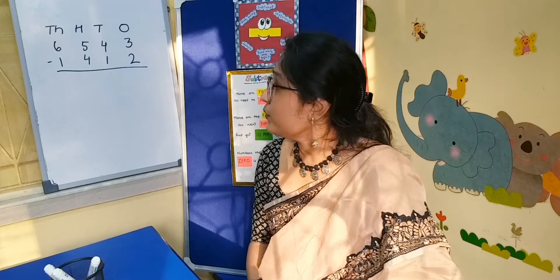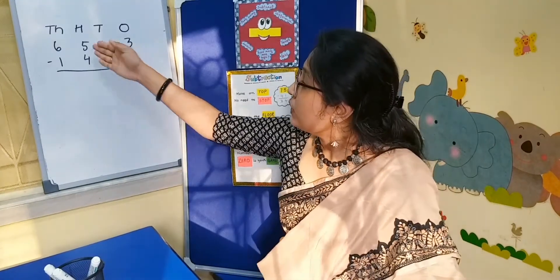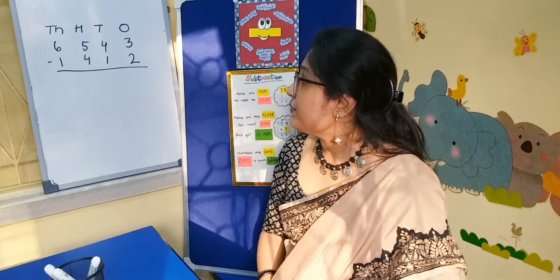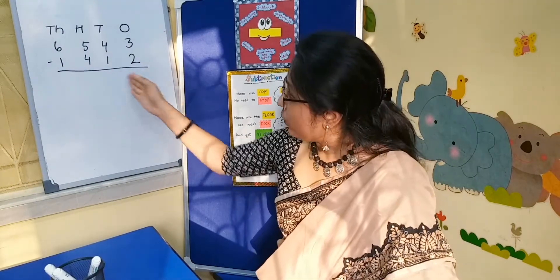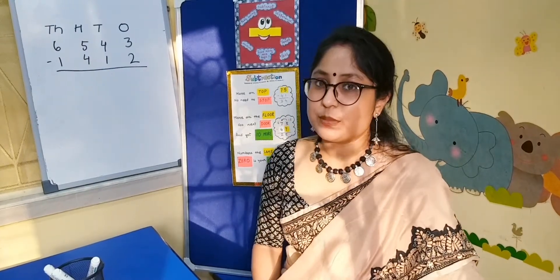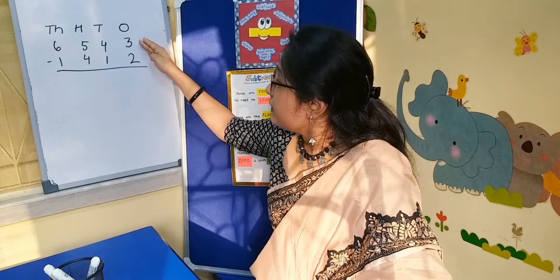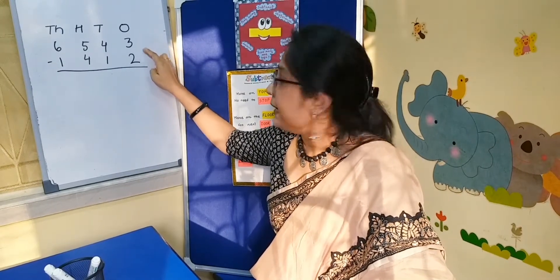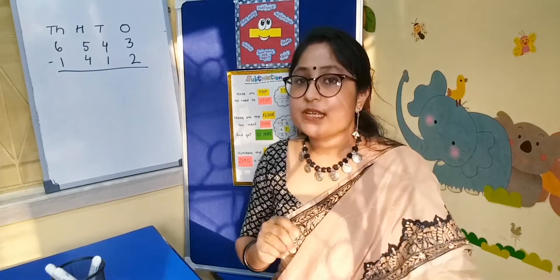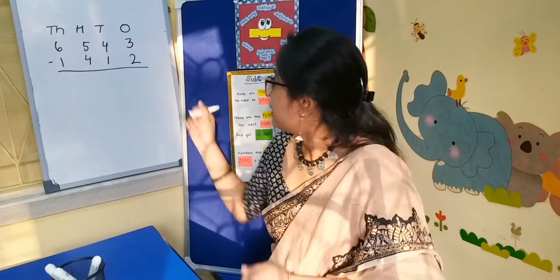As you can see, now we will do 4 digit subtraction. Here are 2 numbers: on the top, here is 6,543 and on the floor, 1,412. Now we will do subtraction. There is more on top and less on the floor, so no need to change anything. From 2 we count to 3: that is 1.